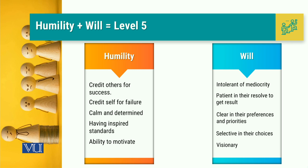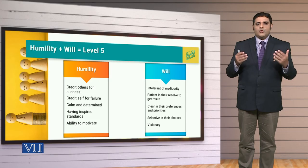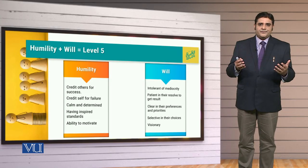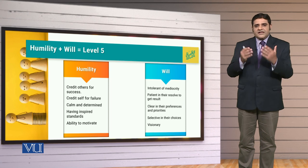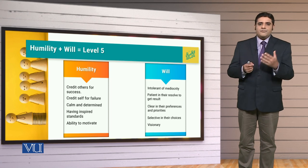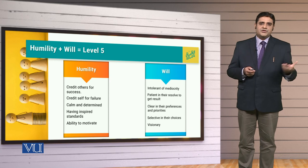At the same time, the leader can select the most optimal and best possible paths for achieving targets, goals and objectives, and the person needs to be visionary. So these two things — humility and will — are the ingredients for making the recipe of Level 5 Leadership.